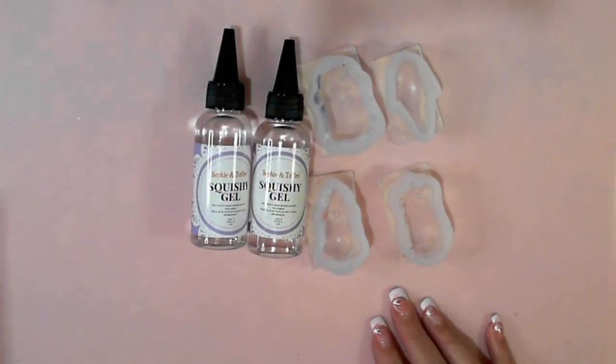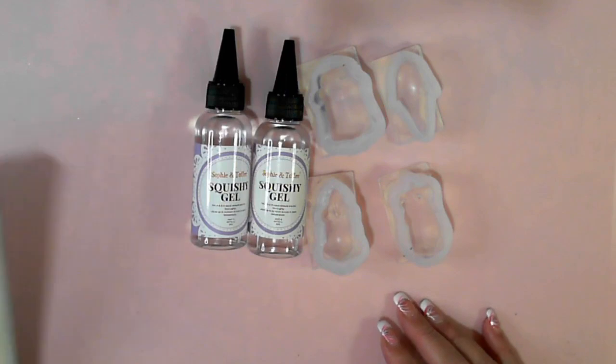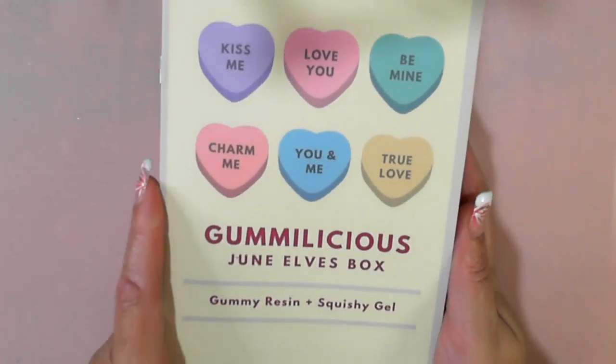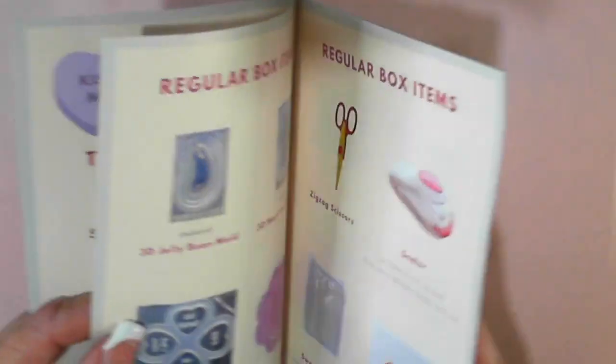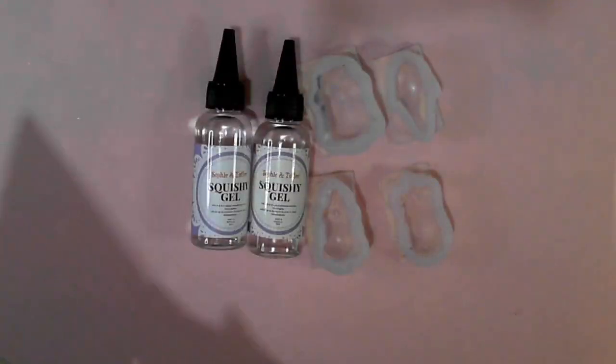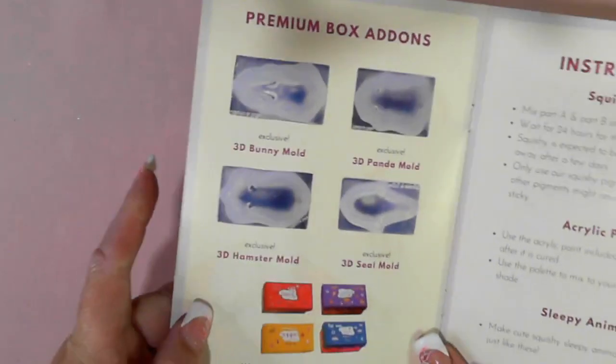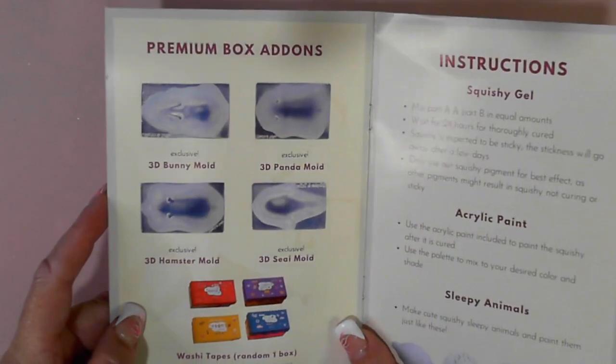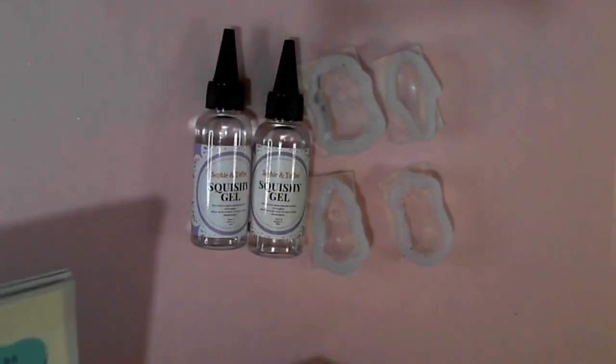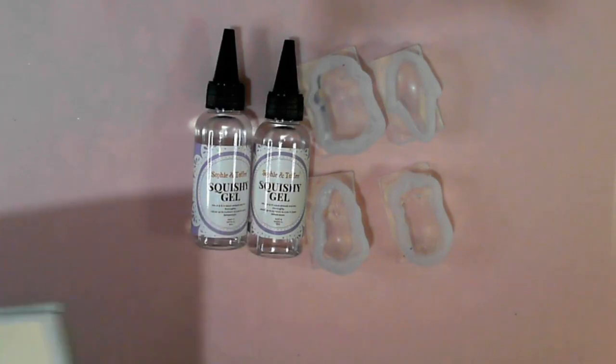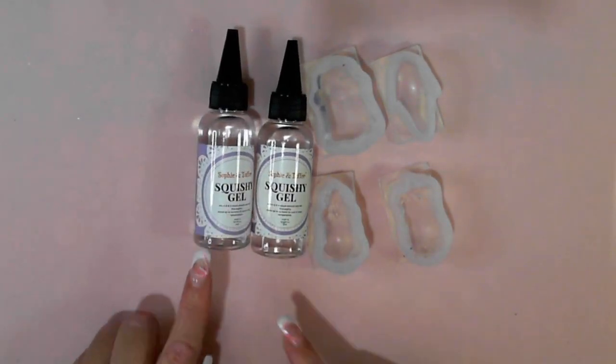Now, what I'm working on today is the Squishy Gel from Sophie and Toffee, which came out of the June Gamelicious Elves box. I am using the Squishy Gel, which is from the regular box items, but I am using the Bunny Molds, the Premium Add-on Molds, 3D Molds. I'm going to attempt to make all four. Hopefully, there's enough product there.